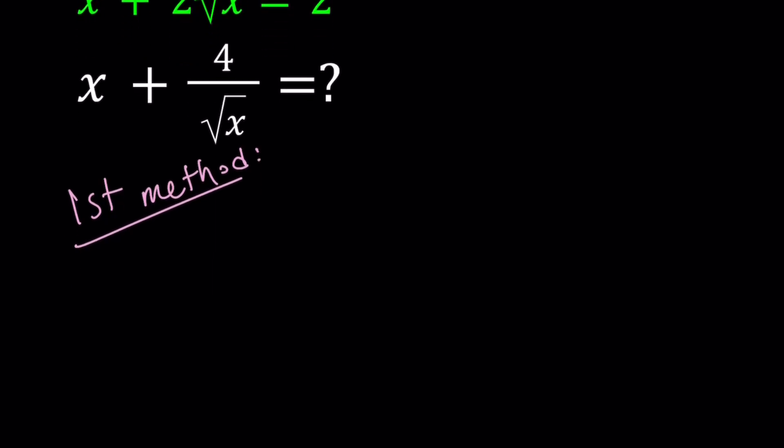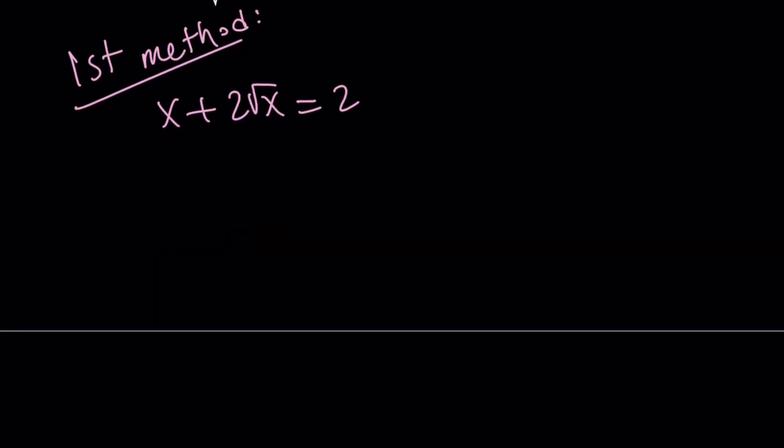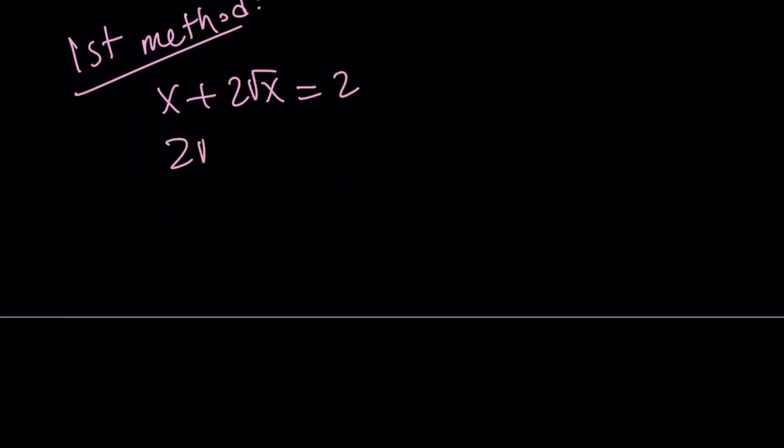Make sure to pay attention to the results because we're going to compare them. So for my first method, I'm going to start with the original equation, x plus 2 root x equals 2. And then I'm going to isolate the radical, 2 root x equals 2 minus x.